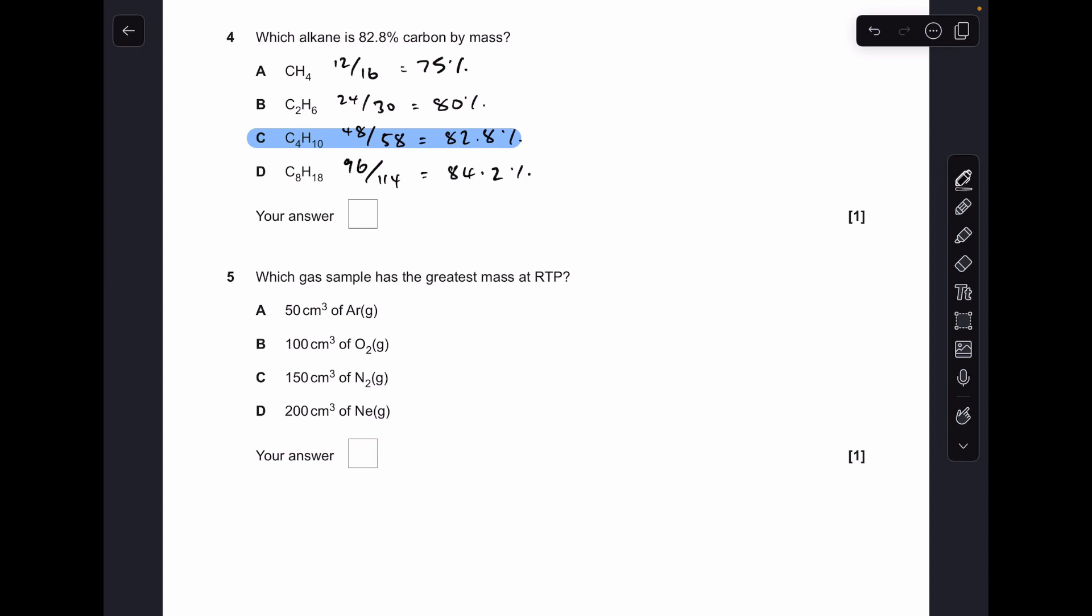Number four: there's all the answers there. That was just the mass of carbon divided by the MR, and you can see C has the percentage 82.8.